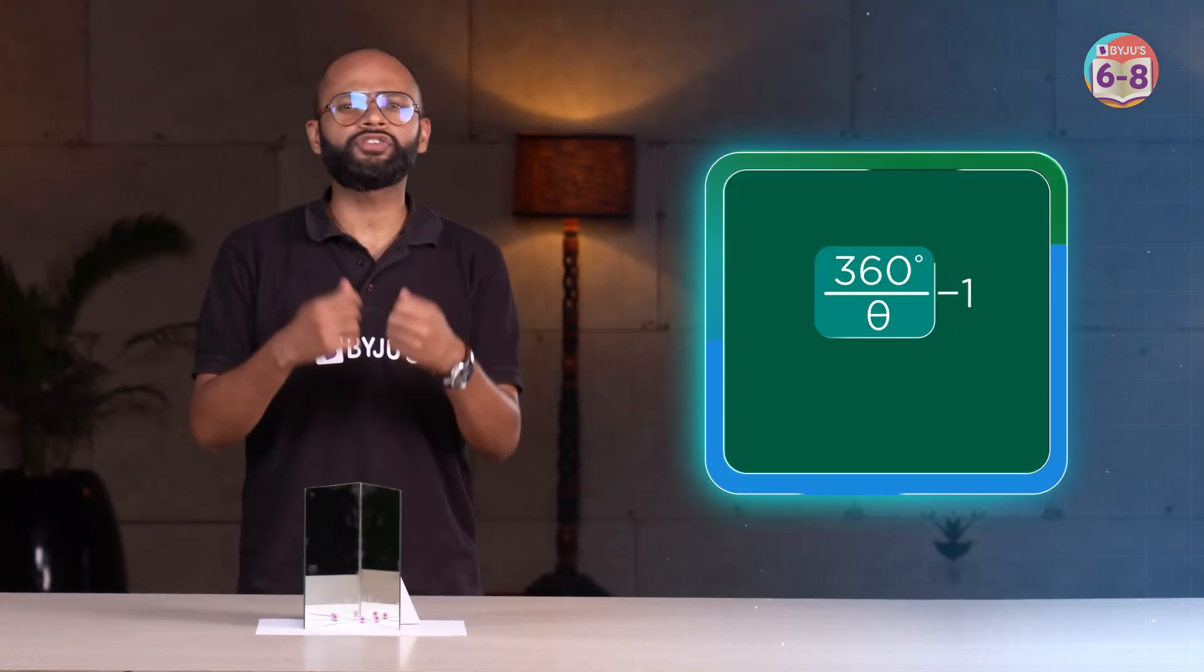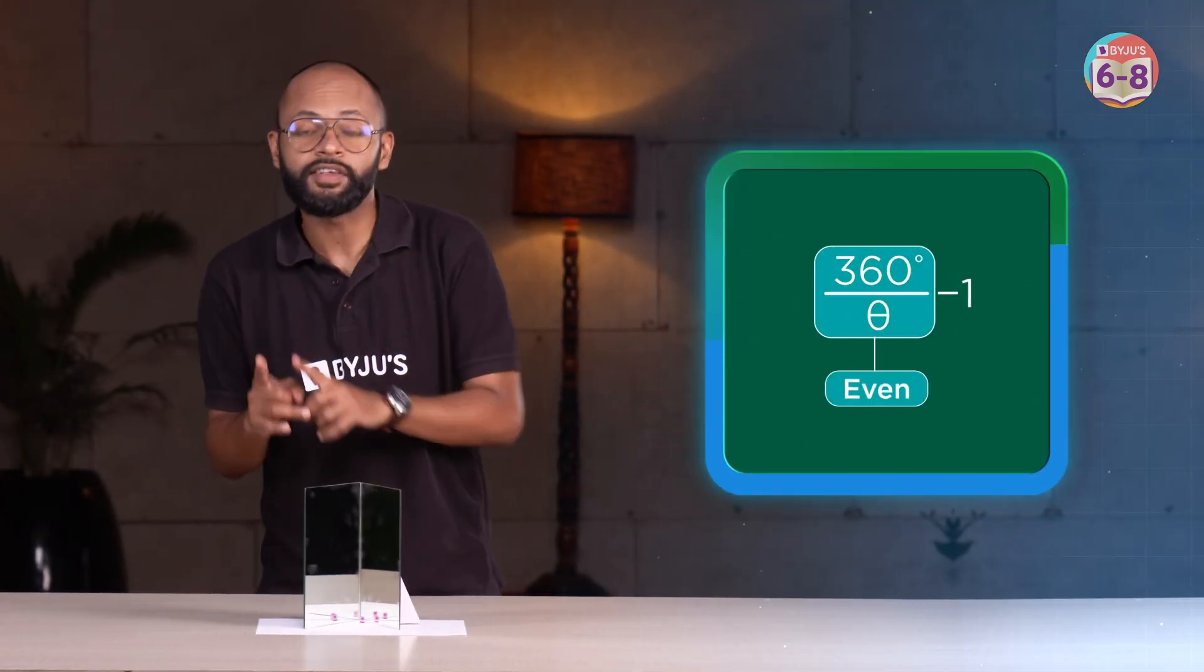Now, let me just tell you something. During this whole discussion, I chose the angle such that 360 by theta comes out to be an even integer. What if it doesn't? Tell me in the comment section what will happen then.